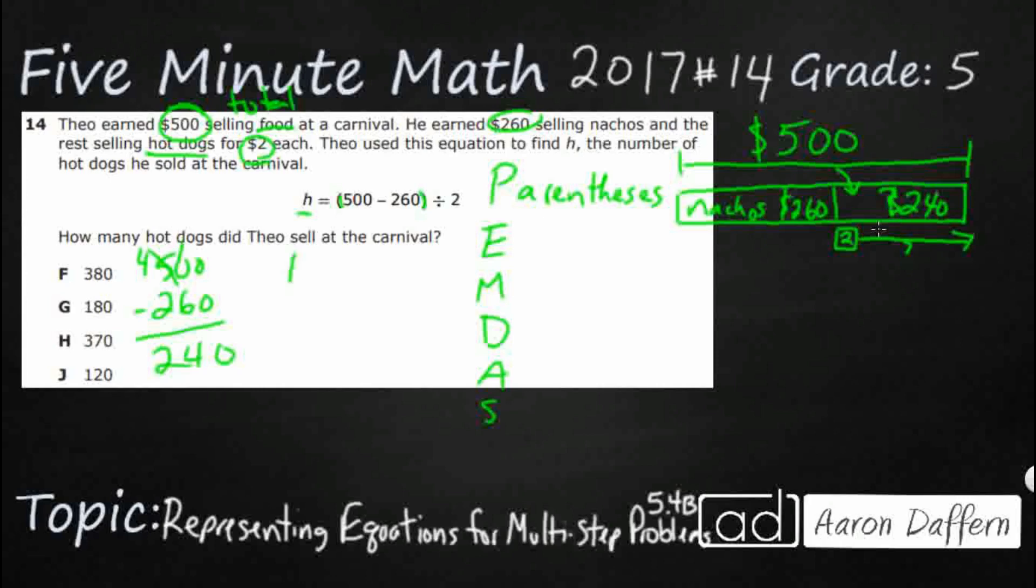So, what I'm going to do is I'm going to rewrite this. And instead of $500 minus $260, I'm going to write $240, because that's really what that simplifies to. And then divide it by 2. So, we've done our parentheses. We don't have any exponents.